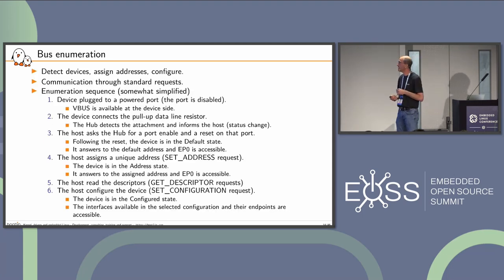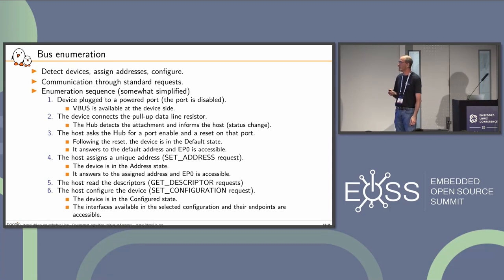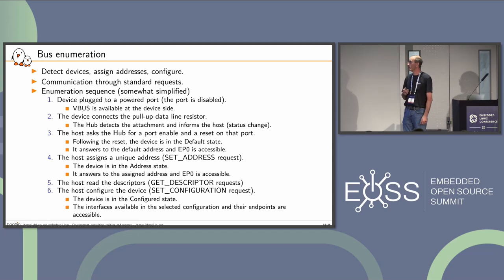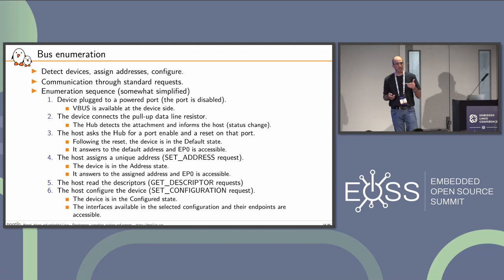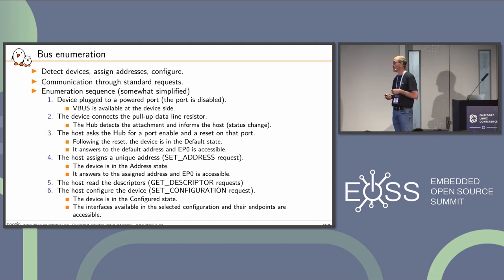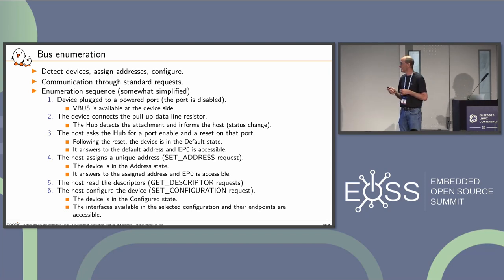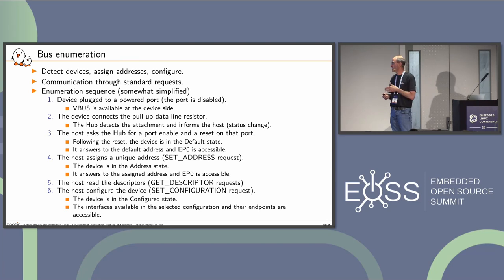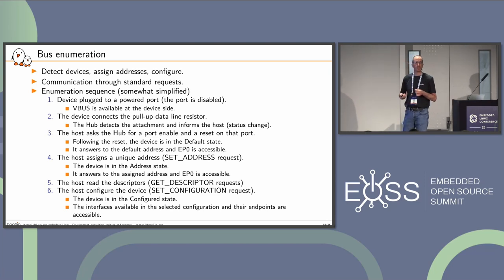Bus enumeration is a critical step at the beginning of a device's life on USB. The goal is to detect the device, assign an address, and configure the device — all through standard requests. The device connects its pull-up data-line resistor, which is detected by the hub and reported to the host. The host enables and resets the port. Following the reset, the device is in default state, the host assigns a unique address via set address, gets descriptors, and finally sends the set configuration request, switching the device to its functional state.